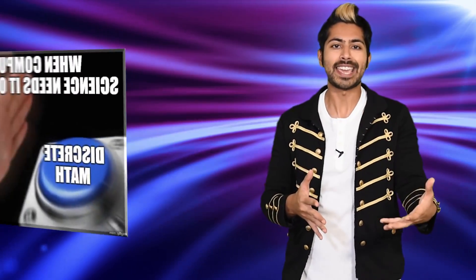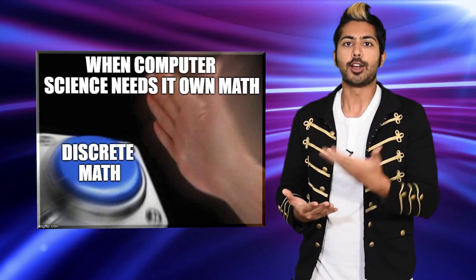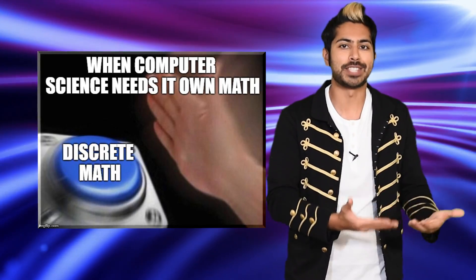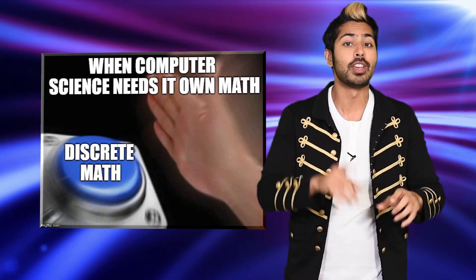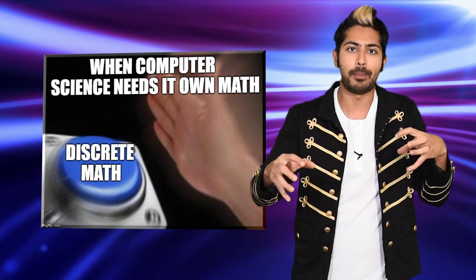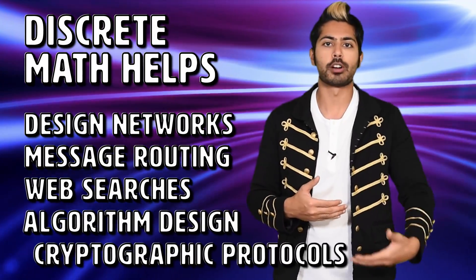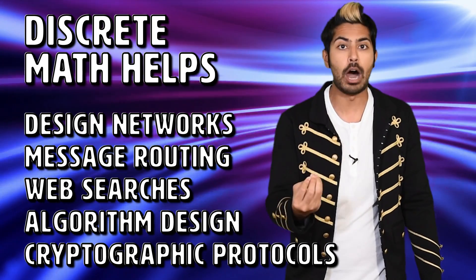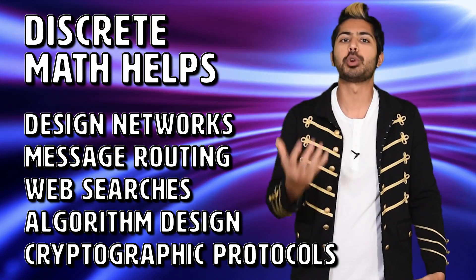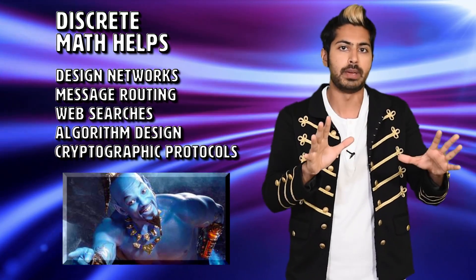Discrete math was created several decades ago as the mathematical language of computer science. Colleges learned that traditional math subjects did not cover the type of math needed by computer scientists, so they put a bunch of math topics together and called it discrete math. Discrete math helps us design high-speed networks and message routing paths, perform web searches, analyze algorithms for efficiency, and design cryptographic protocols that can do things like automatically block any image of Will Smith as a genie beyond cringey.